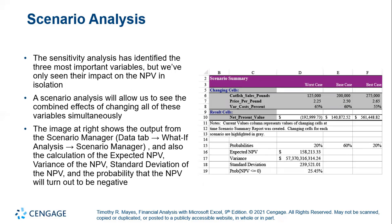Scenario analysis. The sensitivity analysis has identified the three most important variables, but we have only seen their impact on net present value in isolation. Scenario analysis allows us to see the combined effect of changing all of these variables simultaneously. The image on the right shows the output from the scenario manager, what-if analysis, and the scenario manager, including the calculation of expected NPV, variance of the NPV, standard deviation of the NPV, and the probability that the NPV will turn out to be negative.